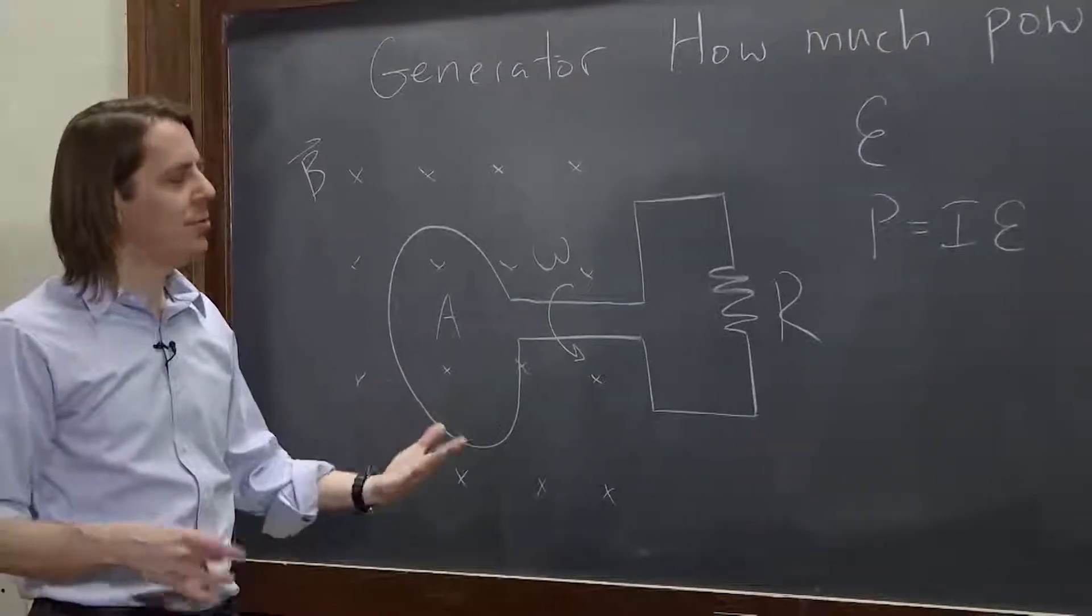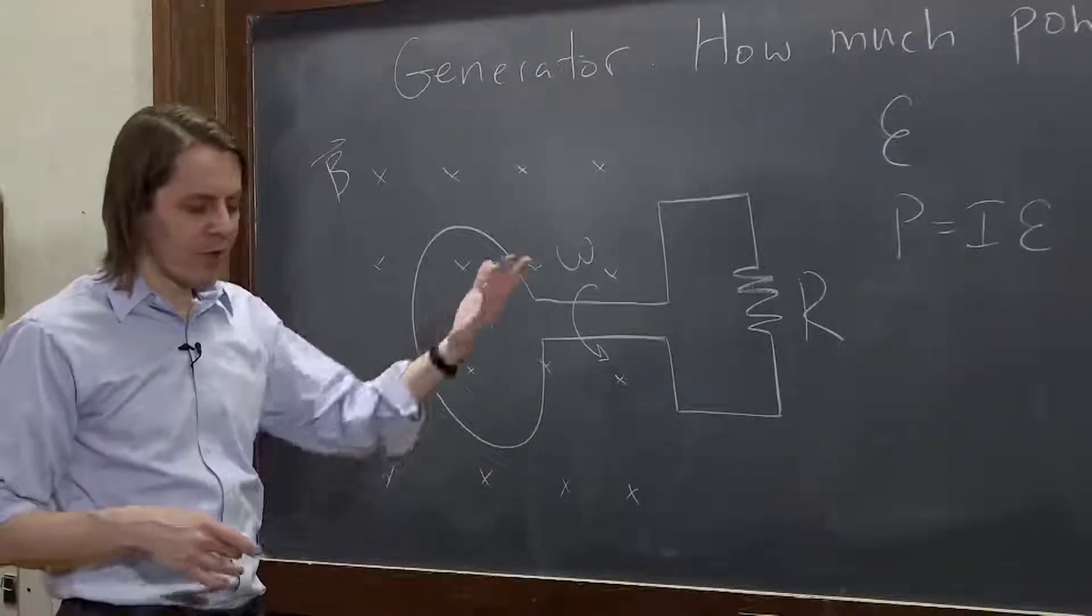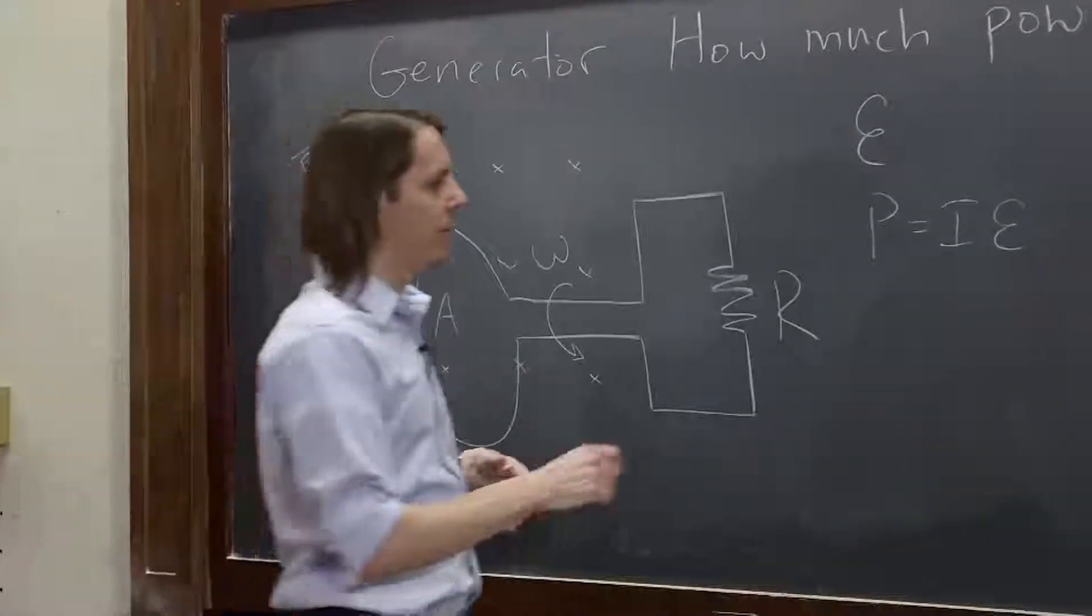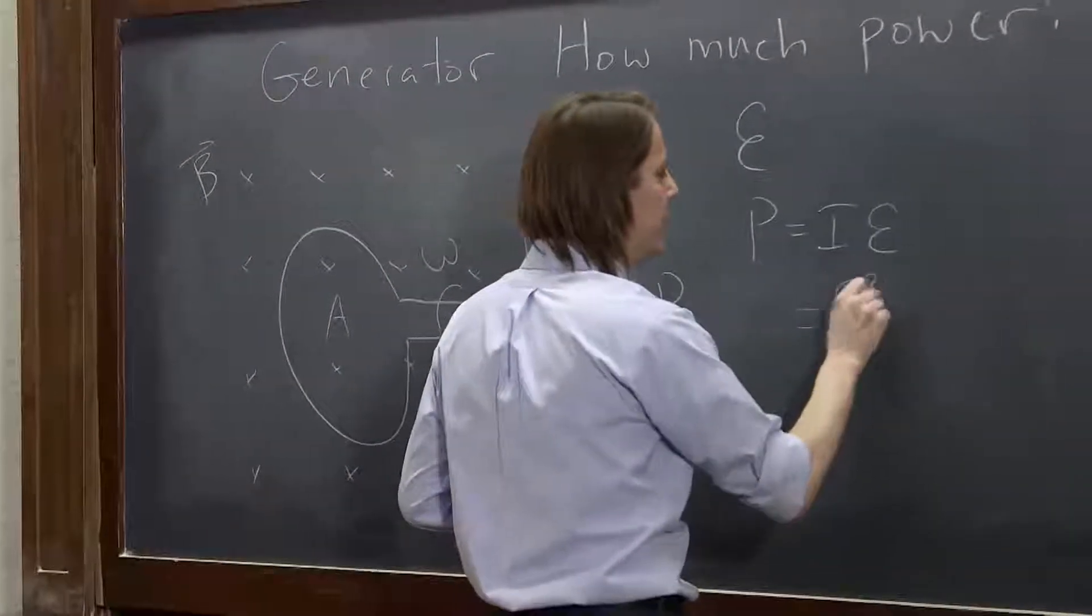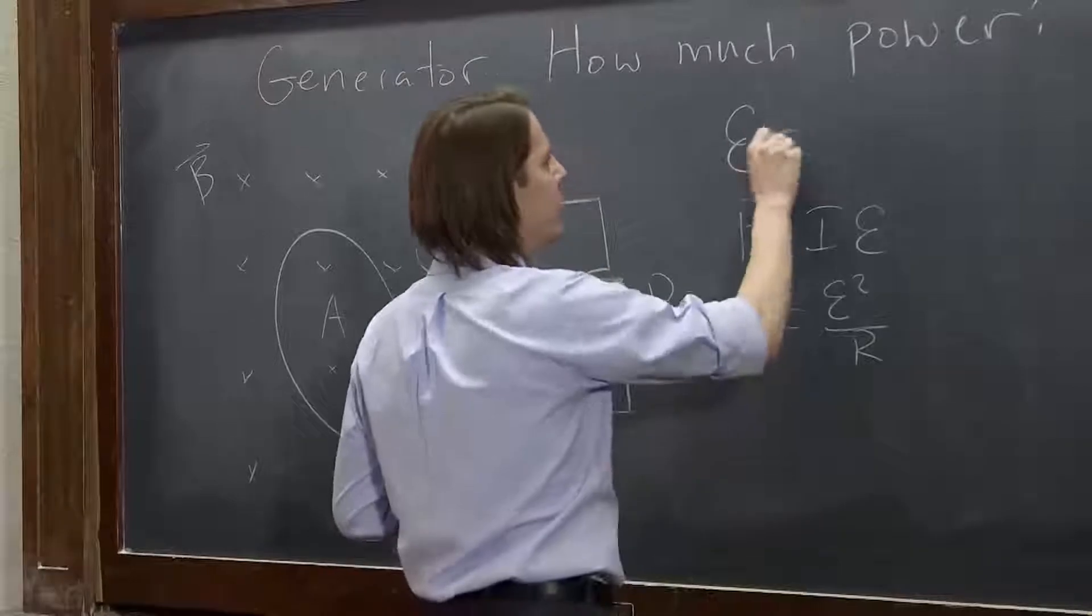And you can also use the same substitutions. We said it was I times the delta V, or in this case I times the E. You could also write that as E squared over R, because E equals IR.